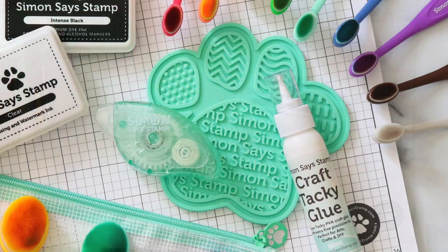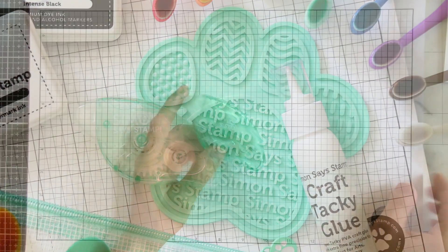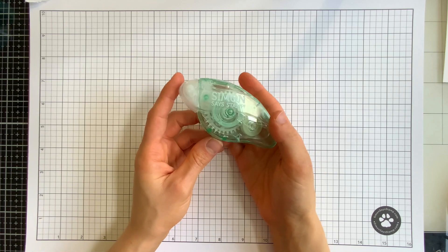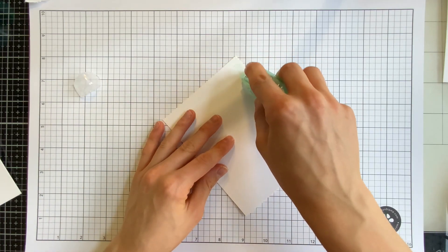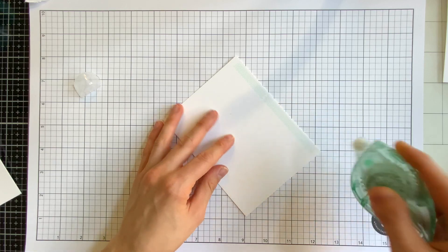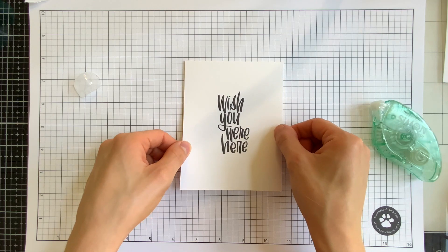Good adhesive is one of the most important aspects of paper crafting and card making. Our beautiful dot runner comes in our signature Simon Teal color and has a specially formulated tape inside.